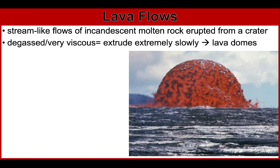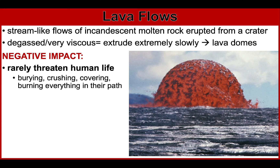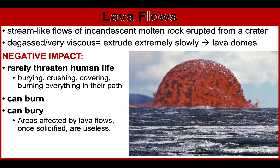This picture is from the 1969 volcanic eruption in Hawaii. Lava flows rarely threaten human life because lava usually moves slowly — silicic flow is about a few centimeters per hour, and basaltic flow is about several kilometers per hour. Hazards include burying, crushing, covering, and burning everything in their path. The intense heat of lava melts and burns areas it covers, and it can bury homes and agricultural areas under meters of hardened rock. Areas affected by lava flows, once solidified, are rendered useless. Lavas can also block bridges and highways, affecting mobility and accessibility of people and communities.